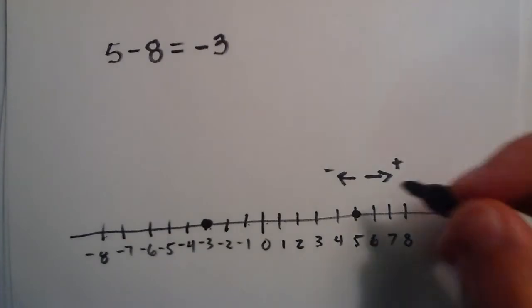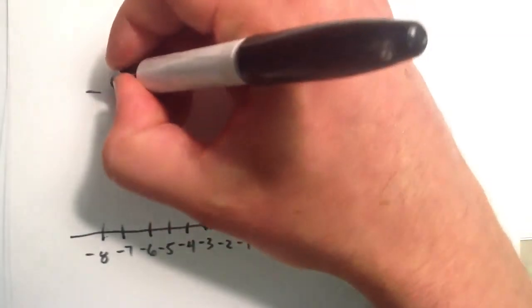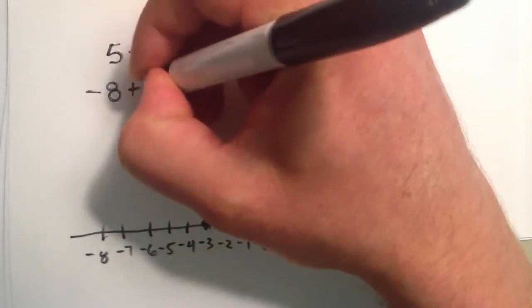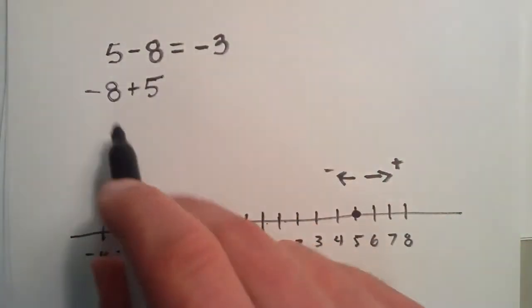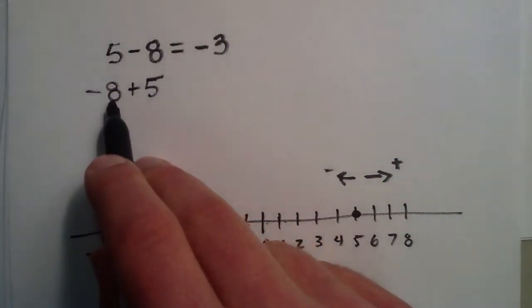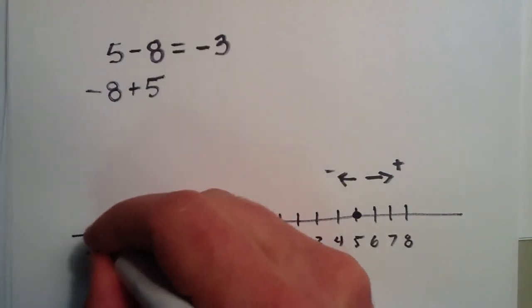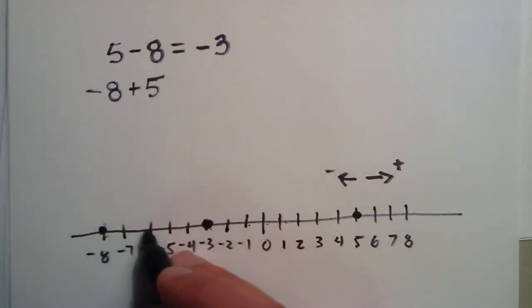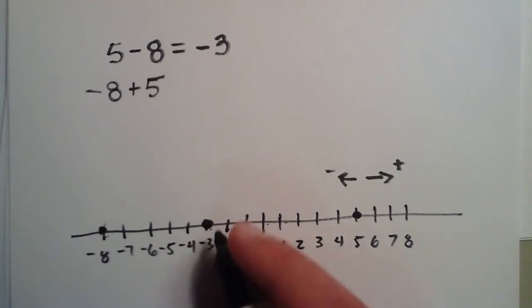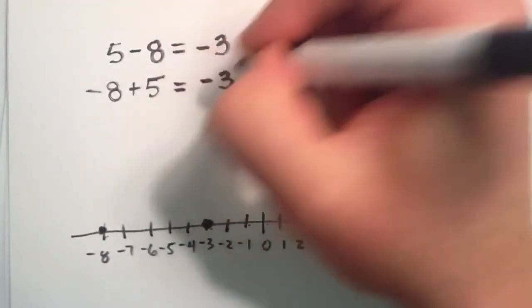And by the commutative property of addition, we could rewrite this as negative 8 plus 5, and this would represent that we owe the bank $8, and we're paying them back 5. So you start here, and you add 1, 2, 3, 4, 5, which also brings you to the negative 3.